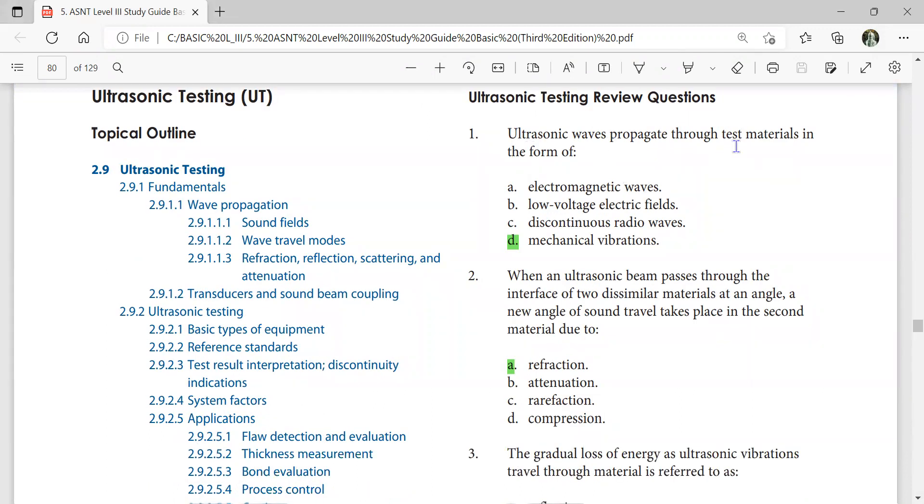Ultrasonic waves propagate through test material in the form of mechanical vibration. When the ultrasonic beam passes through the interface of two dissimilar materials, a new angle of sound travel takes place in the second material due to refraction.